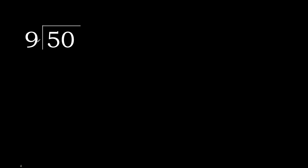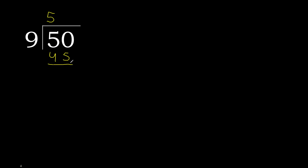50 divided by 9. 5 is less, therefore next 50. 50 is not less, therefore with 50: 9 multiplied by which number is nearest to 50 but not greater? 9 multiplied by 6 is 54, which is greater. 9 multiplied by 5 is 45, which is not greater. 50 minus 45 is 5.